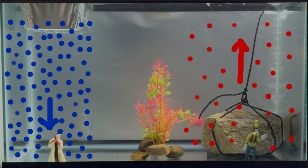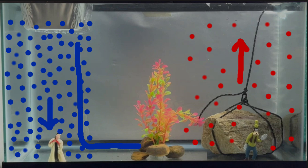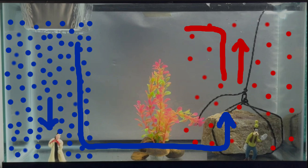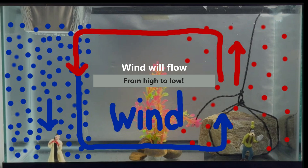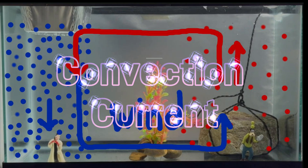Now you may be thinking to yourself, this is all very interesting, but what about the wind? Well, think about it. As that denser air falls and hits the ground, it's got to go somewhere. So it turns and travels horizontally along the surface of the earth and takes the place of the rising low pressure air. Wind will always flow from the high pressure region to the low pressure region. What's the scientific term for this? It's a convection current.